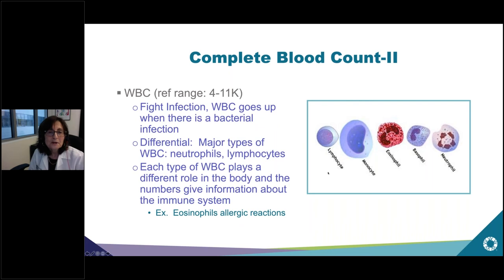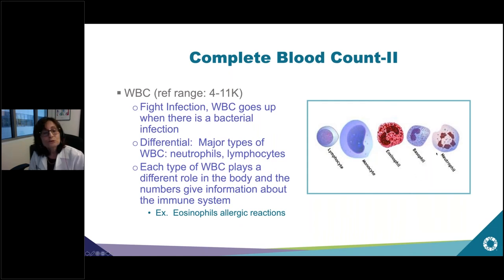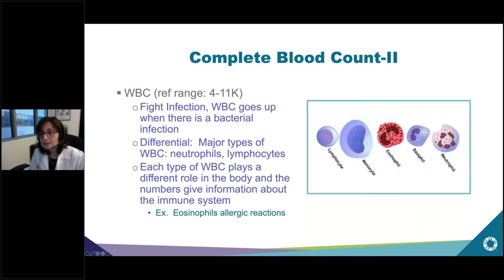White cells circulate in your blood and fight infection — if you're exposed to an infectious agent, your white cells may go up, so your doctor may look for a high neutrophil count. When we get a white count, we get a differential, which classifies all the different kinds of white cells: neutrophils, lymphocytes, monocytes, and others. Each type plays a different role — for example, eosinophils will be high in an allergic reaction.